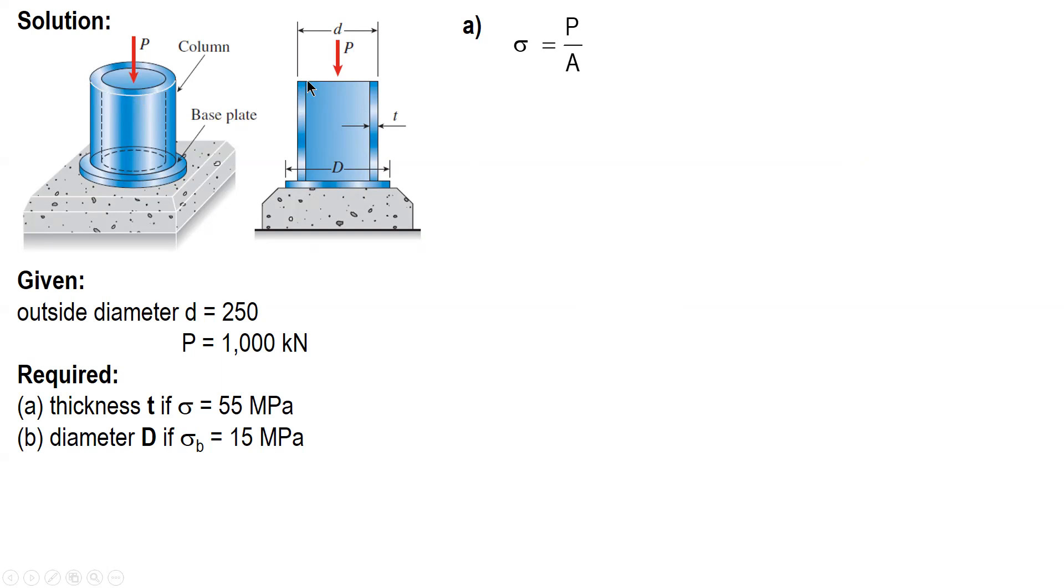Now for the smaller circle, the inner diameter, this one, inner diameter is equal to outer diameter minus twice the thickness. Okay, so outer diameter minus twice the thickness, that's the inner diameter. And so we have this one.